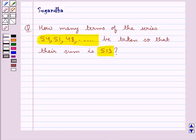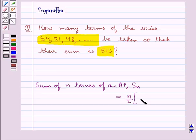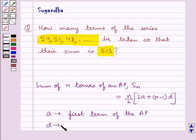For this we must know what is the sum of n terms of an AP. It is given by S_n equals n/2 times [2a + (n-1)d], where a is the first term of the AP and d is the common difference of the AP.